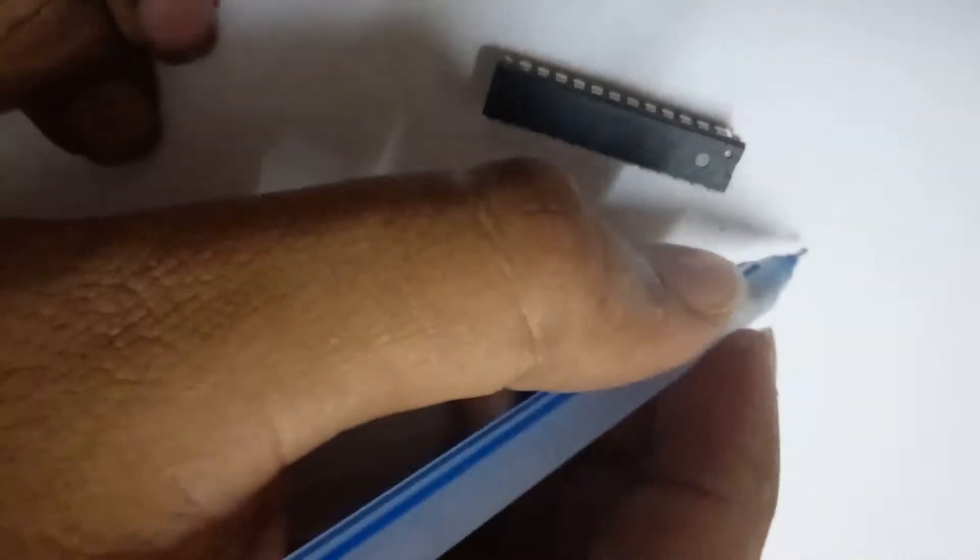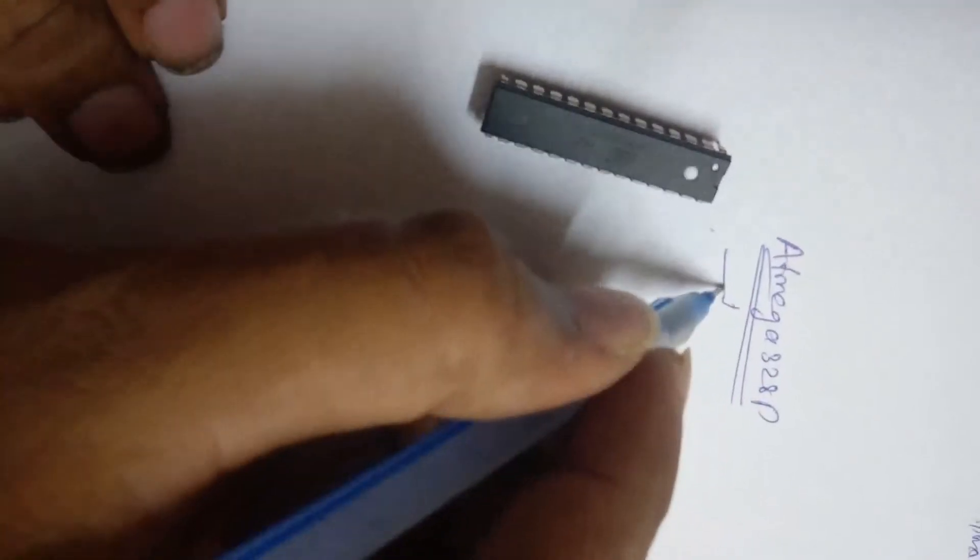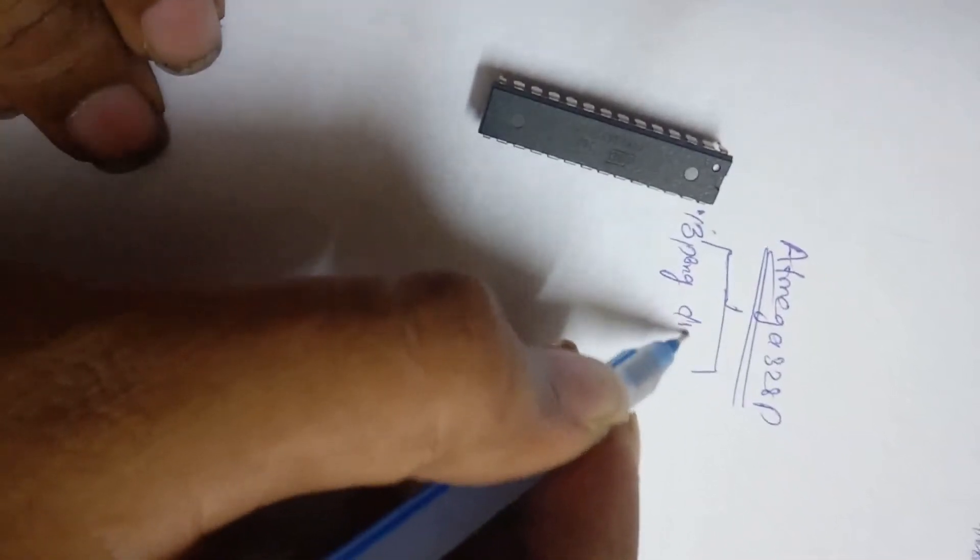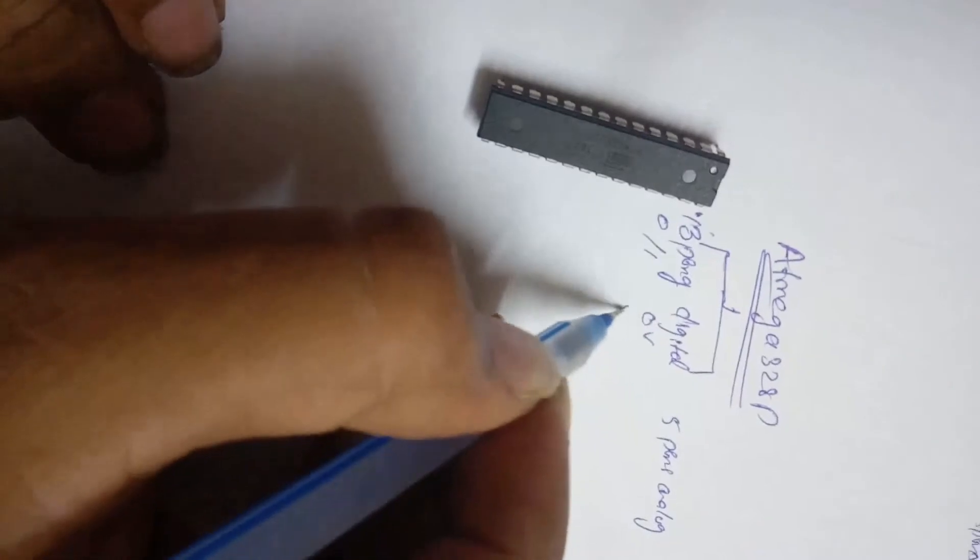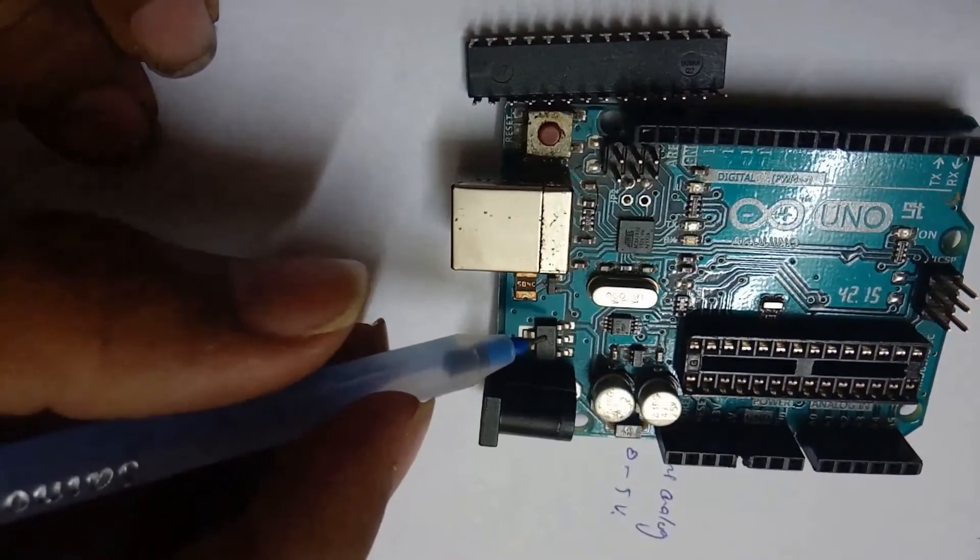Let us discuss this microcontroller. The name of this microcontroller is ATmega328P. Now these 13 pins are digital, 5 pins are analog. Digital means 0 or 1, or 0 volts or 5 volts. Analog pin in between 0 to 5 volts. Basically this microcontroller works on only 5 volts. If you give more than 5 volts, it will burn out.